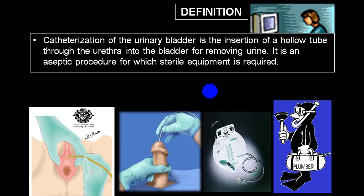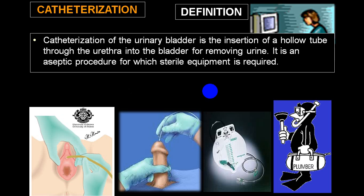When you say only catheterization without mentioning where it is being done, it refers to insertion of a hollow tube into that area. For example, cardiac catheterization involves a hollow tube to study the coronary artery, right heart, or left heart — we call these right heart catheterization and left heart catheterization. So you have to specify: catheterization of the urinary bladder.